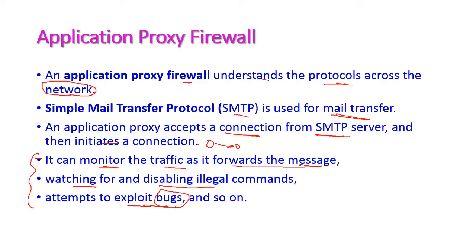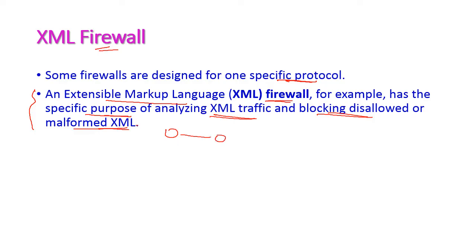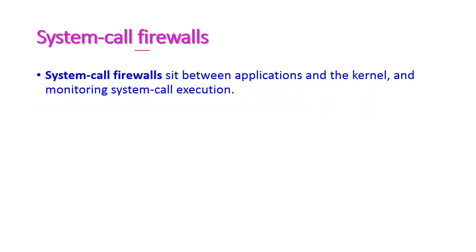The next type is the XML firewall, which is designed specifically for the XML — Extensible Markup Language — protocol. It has a specific purpose of analyzing XML traffic and blocking disallowed or malformed XML. XML is used for bulk data transfer between two systems. The final type is the system call firewall, which lies between the application and the kernel and monitors all system call executions.